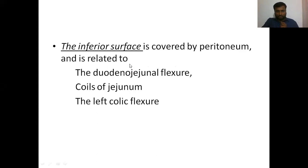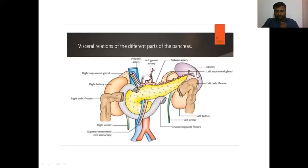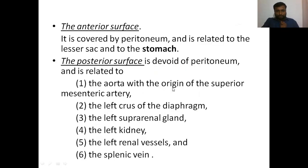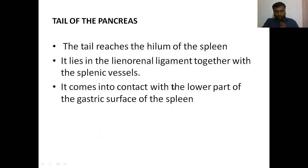Looking at the next slide, we can see the head, neck, body, and tail of the pancreas. The tail of the pancreas reaches the hilum of the spleen. Under there, it lies on a ligament called the lienorenal ligament. That's all about the tail - it reaches the hilum of the spleen and lies on the lienorenal ligament.